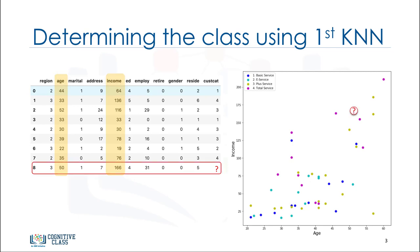Now, let's say that we have a new customer, for example record number 8, with a known age and income. How can we find the class of this customer? Can we find one of the closest cases and assign the same class label to our new customer? Can we also say that the class of our new customer is most probably group 4, i.e. total service, because its nearest neighbor is also of class 4? Yes, we can. In fact, it is the first nearest neighbor.